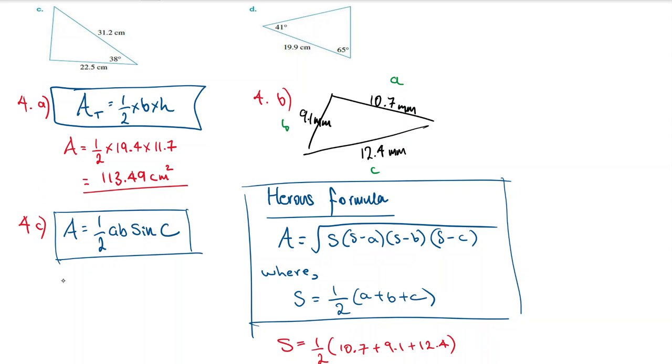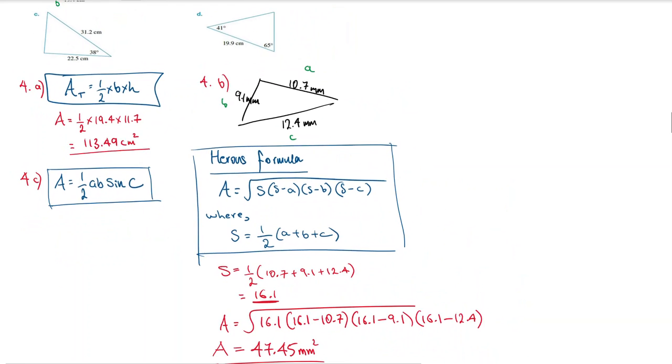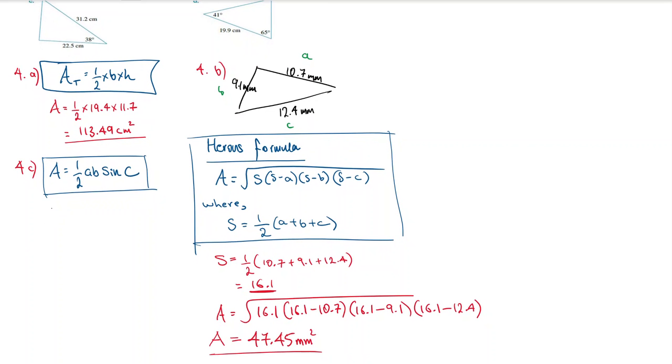Let me redraw this triangle. So I've got 22.5 centimeters, 31.2 centimeters, and my angle there is 38 degrees.